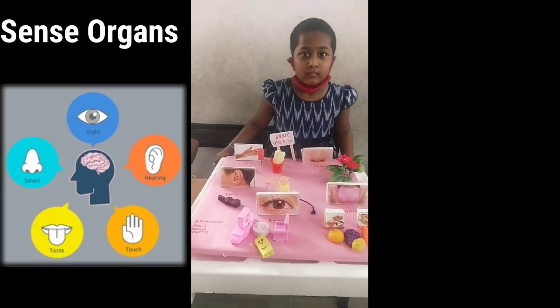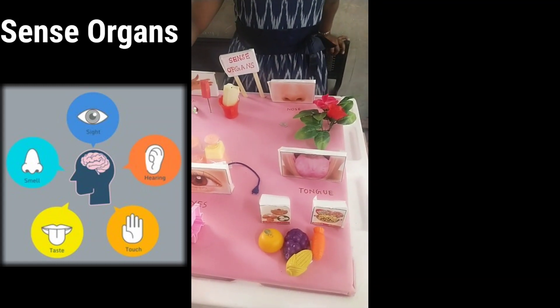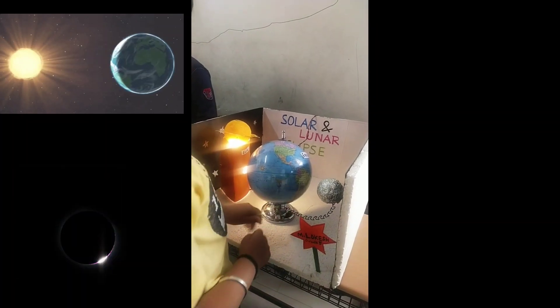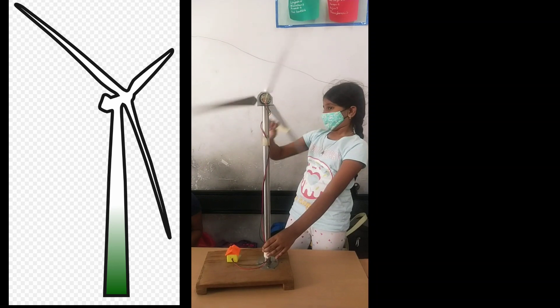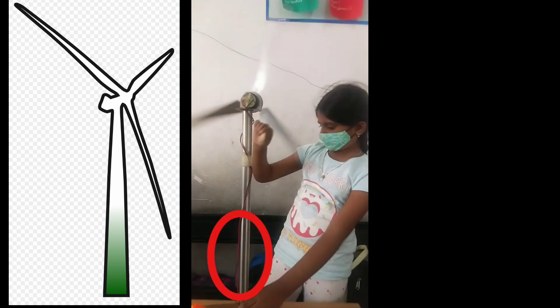And this kid is showing our sensor gun model. And my friend is explaining about the solar eclipse and lunar eclipse. This little girl was spinning a windmill and the power was generated to that light.